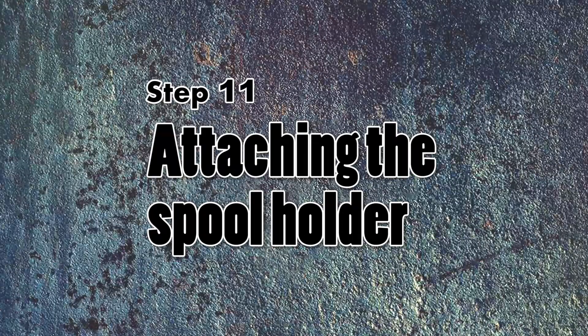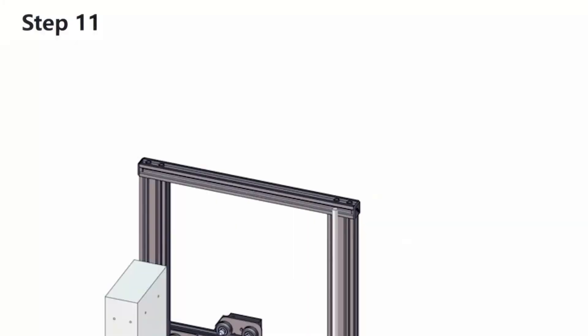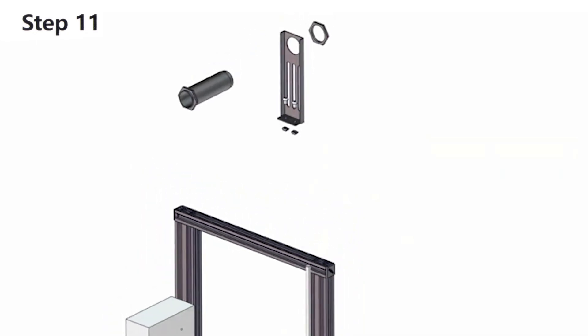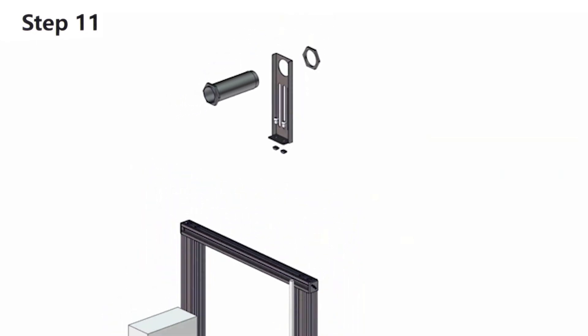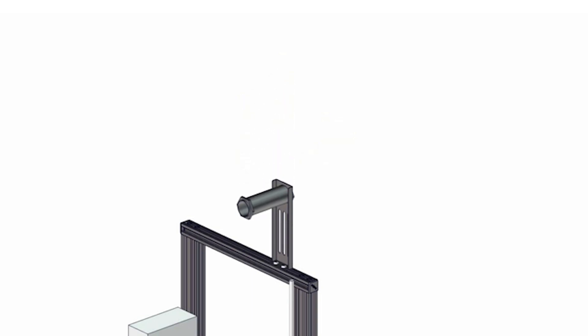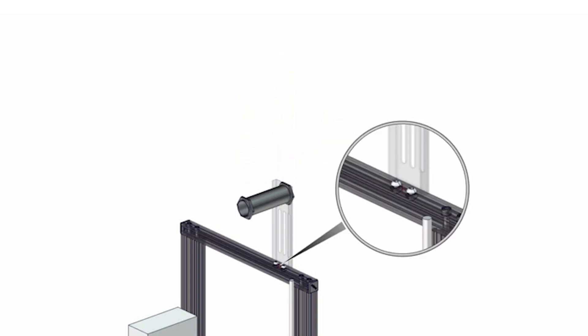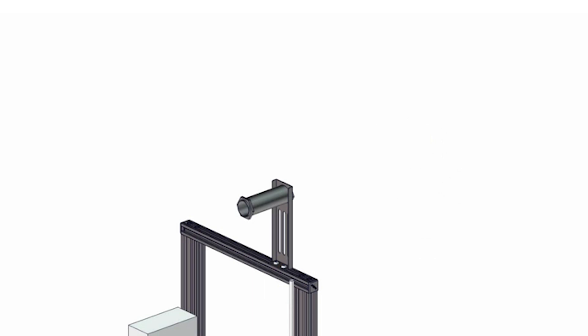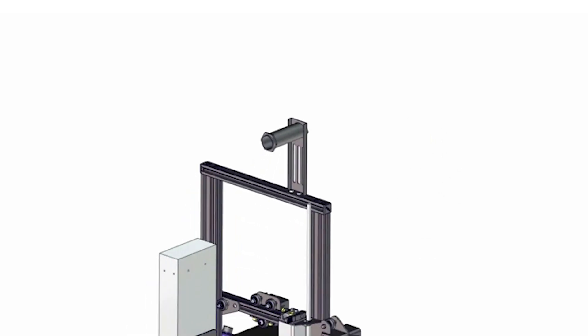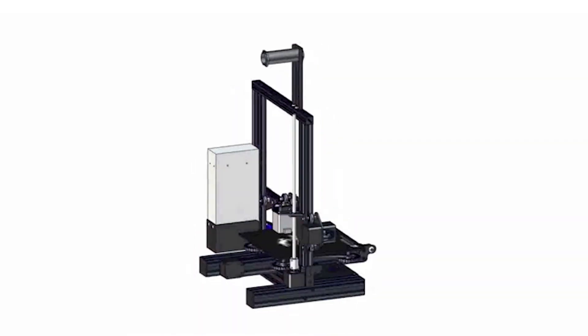On step 11, we are going to attach the spool holder. Attaching the spool holder is no rocket surgery, but as you can see on the 3D animation, Creality has suggested that we should install the spool holder a little closer to the center of the printer. However, experience has taught us that we should install the spool holder as close as possible to the right leg of the printer.